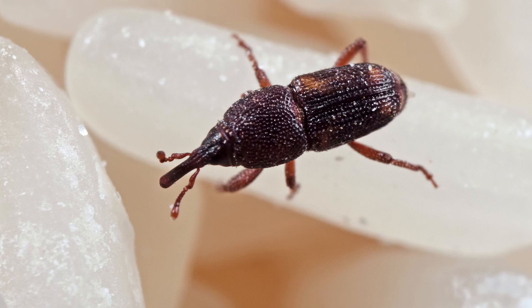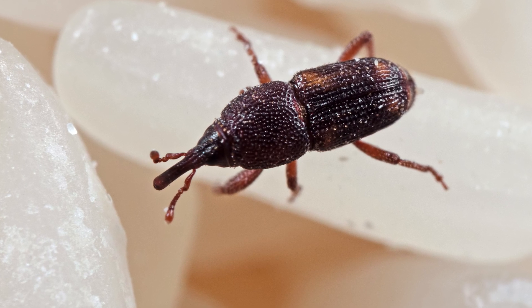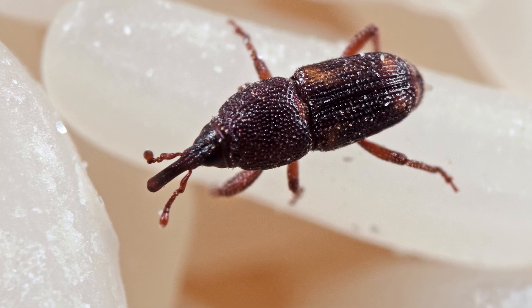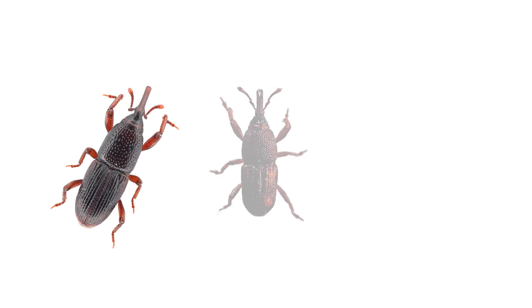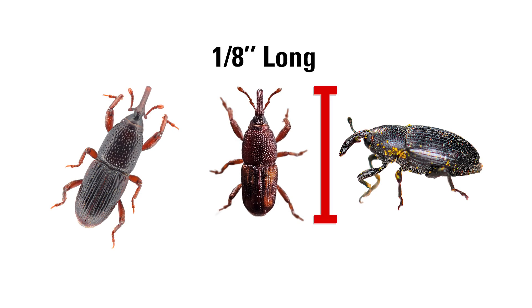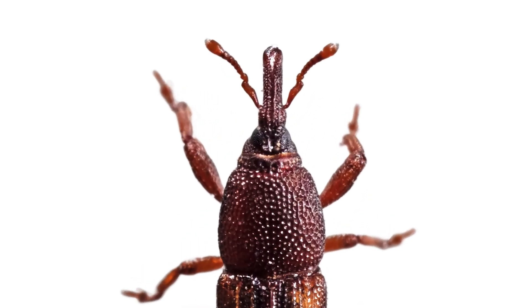Weevils are small beetles commonly found in stored grains and food products. The most common types include the grain weevil, rice weevil, and maize weevil. These beetles are about an eighth of an inch long and are easily identified by their elongated snouts.